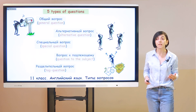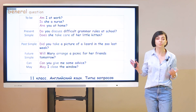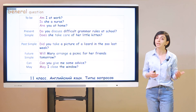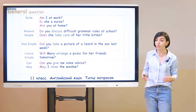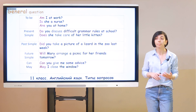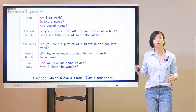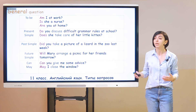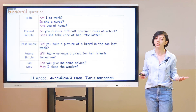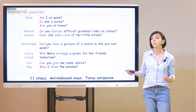We will start with general questions in different forms. General questions, as I have said, you can answer only yes or no. For example, if we use the verb to be: Am I at work? — Yes, I am, or No, I'm not. Is she a nurse? — Yes, she is, or No, she isn't. Are you at home? — Yes or no, and so on.